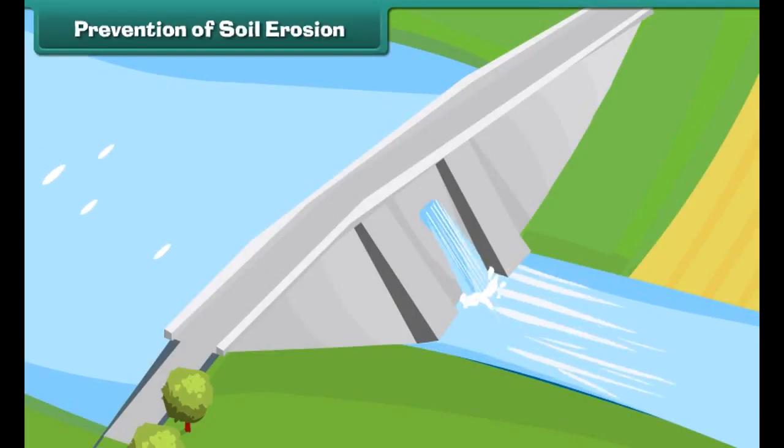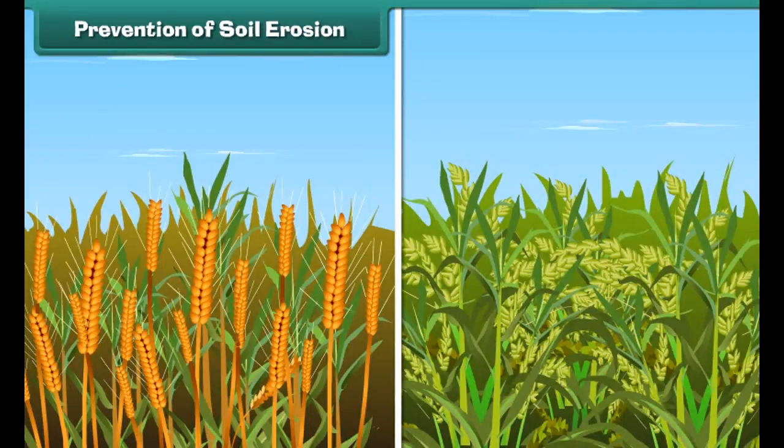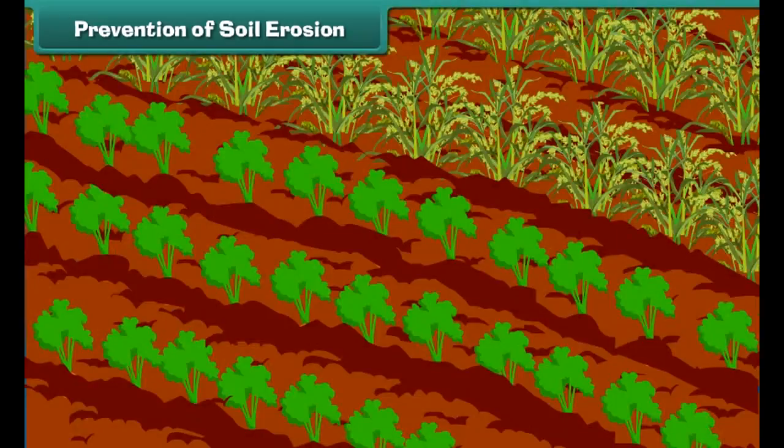Trees planted across the wind direction protect soil against high velocity winds. Controlling overgrazing of the land by animals also controls soil erosion. Building dams control soil loss.